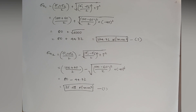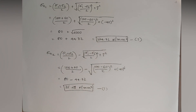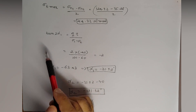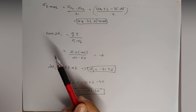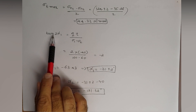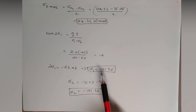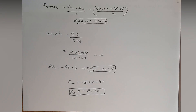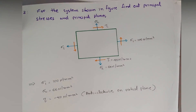To find principal stresses and principal planes, we need to find sigma n1 (major principal stress), sigma n2 (minor principal stress), sigma t max (maximum tangential stress), and the angles alpha 1 and alpha 2. Alpha 1 is found using: tan(2α1) = 2τ / (σ1 − σ2), and alpha 2 = alpha 1 minus 90 degrees. From the data we have sigma 1, sigma 2, and tau.